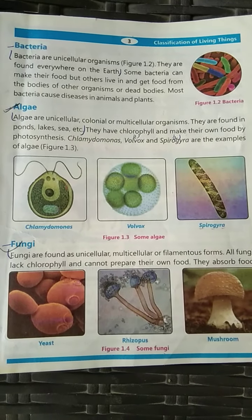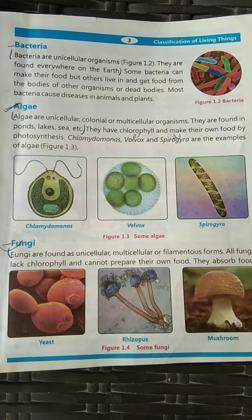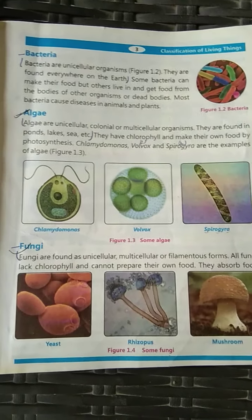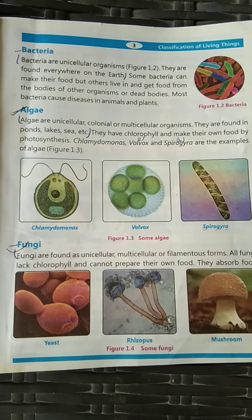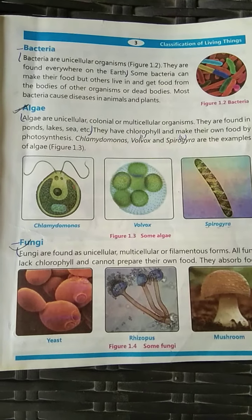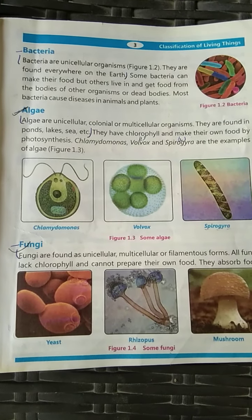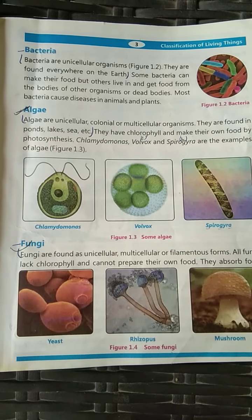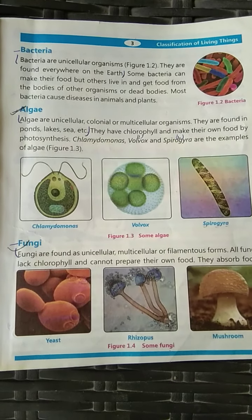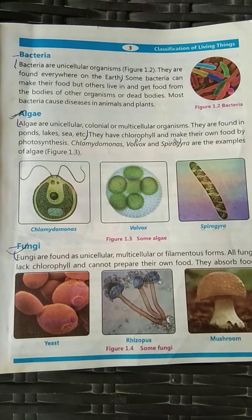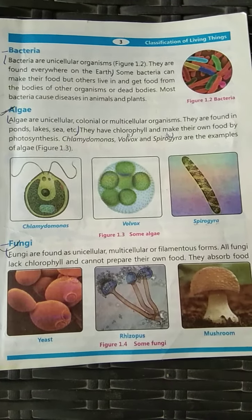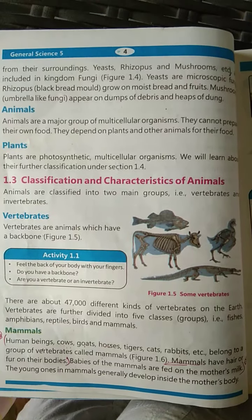All fungi lack chlorophyll and cannot prepare their own food. Plants have chlorophyll and they can make their own food, but fungi are totally the opposite — they lack chlorophyll. They absorb their food from their surroundings.